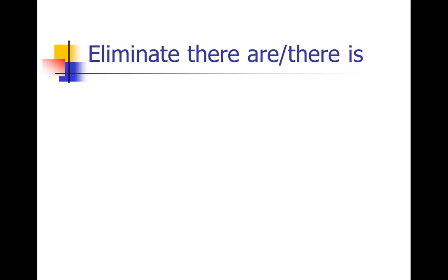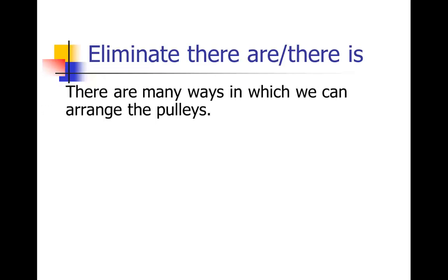Another little thing you can look for are instances where you've got there are or there is, when you actually completely don't need those words. So here's a very simple example. There are many ways in which we can arrange the pulleys. It kind of feels like you need the there are, but in fact you actually don't need it. You can just say, we can arrange the pulleys in many ways. You can drop that whole there are.